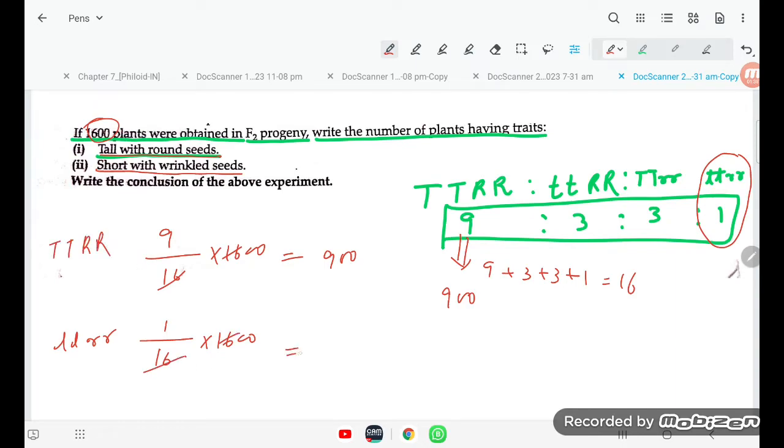So what is, cancel out, this is 100. So here is how much, student? 900 and here is 100. This is the answer, student.